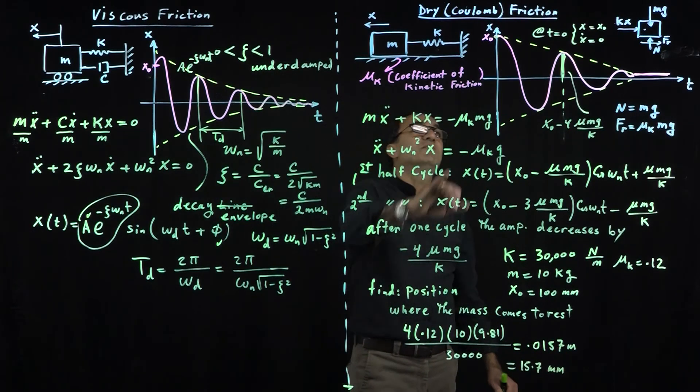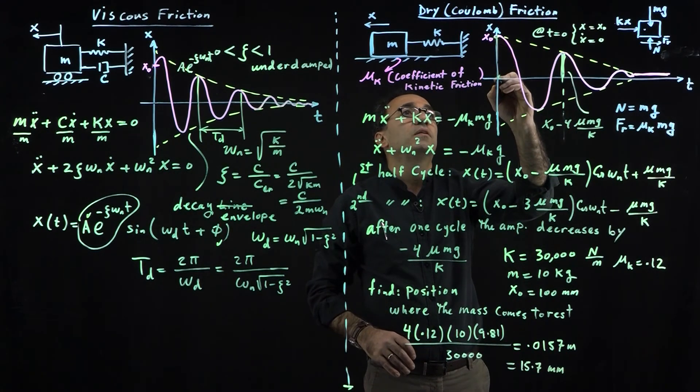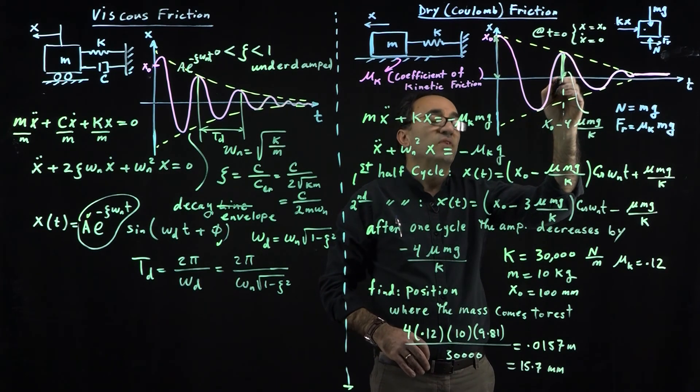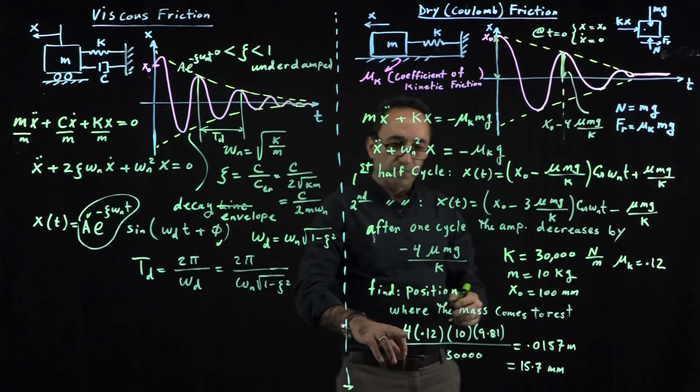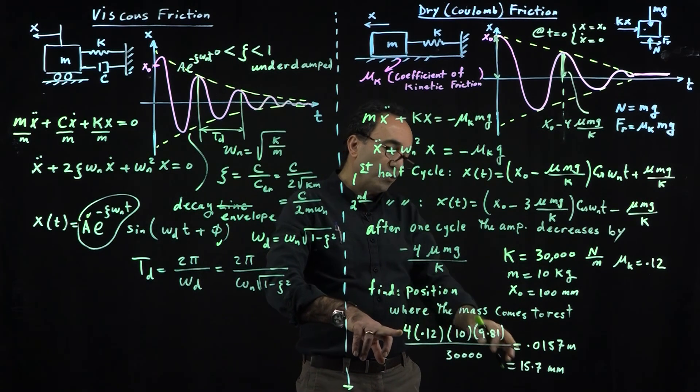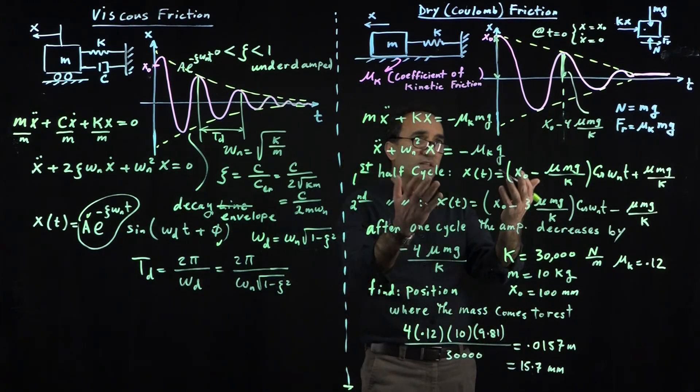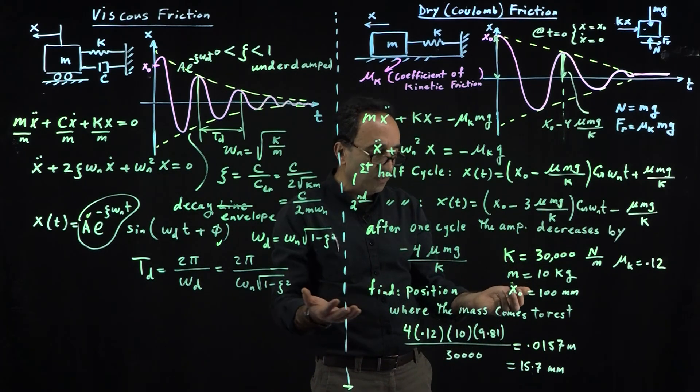That means after the first cycle—this is the 100 millimeters—after the first cycle, you're gonna go through a reduction of 15.7. The question is, within that 100 millimeters, how many of this 15.7 do we have?